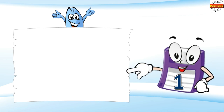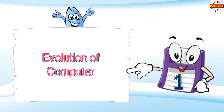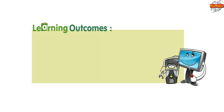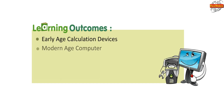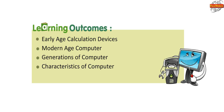Lesson 1: Evolution of Computer. Learning outcomes covered include Early Age Calculation Devices, Modern Age Computer, Generations of Computer, Characteristics of Computer, and Limitations of Computers.